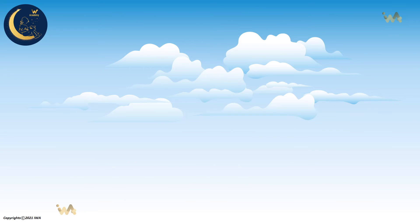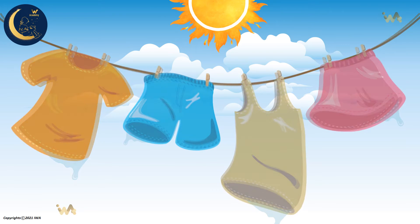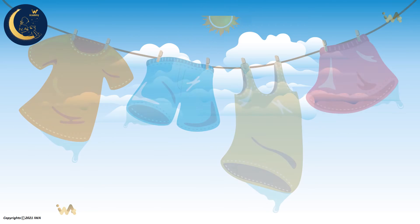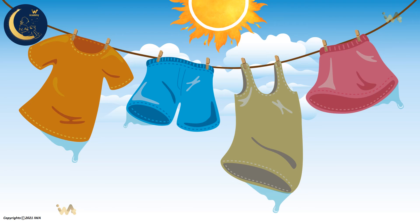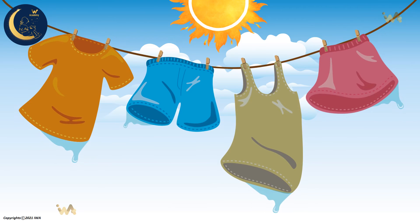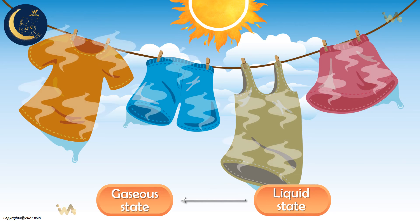In addition, when hanging wet laundry under the warm sunlight, we notice that the water disappears after some time. The reason for this is that the sunlight heats the water on the clothes, so it changes from a liquid state to a gaseous state. As a result, we see the water evaporate.